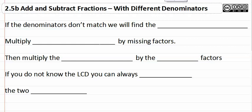2.5b, add and subtract fractions with different denominators. If the denominators in your fractions don't match, we will need to be finding the least common multiple of those two, or what we will now call the least common denominator.